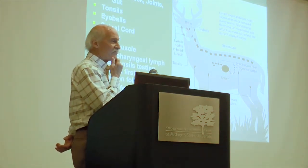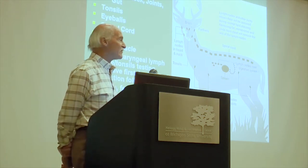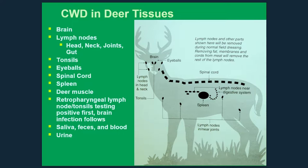As Ed explained, deer get infected with CWD by either ingestion or potentially uptake through the nasal area. Exactly how the agent moves through the body is somewhat of a conundrum. The lymph nodes seem to get infected pretty early after ingestion, then it moves to the nervous tissue, the spinal cord, and eventually gets to the brain. As we've developed more sensitive methods, we've found that almost all tissues in deer have some degree of positivity — probably everything except bone and antlers.